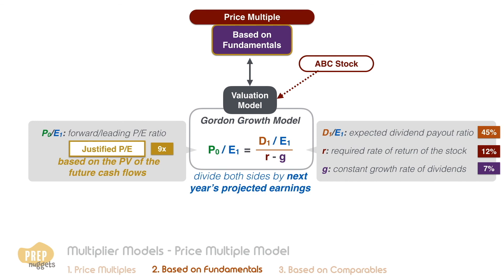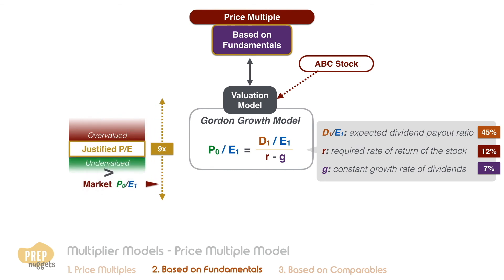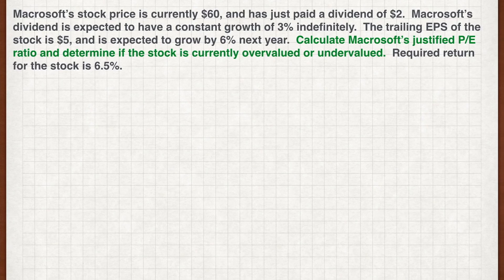The justified P/E ratio serves as a benchmark for the price at which the stock should trade. If the firm's forward P/E based on the stock's market price is higher than the justified P/E, the stock would be considered overvalued. Conversely, if the P/E ratio is lower, the stock would be considered undervalued. Let's work on an example: Macrosoft's stock price is currently $60 and has just paid a dividend of $2. Macrosoft's dividend is expected to have a constant growth of 3% indefinitely.